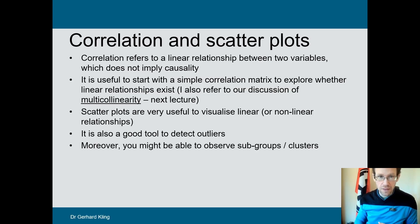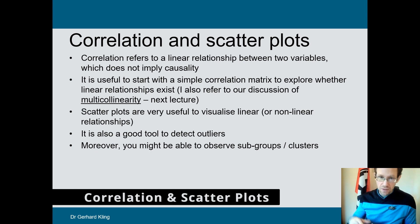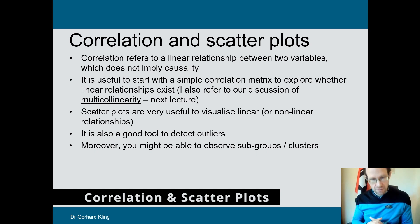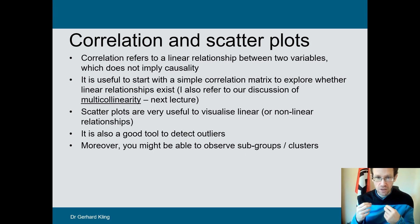The first point is to look at correlations and scatter plots. Very often people overlook this part and jump straight into a regression analysis. However, very frequently you identify problems just by looking at your data. Looking at a scatter plot can give you some visual insights into data structures.